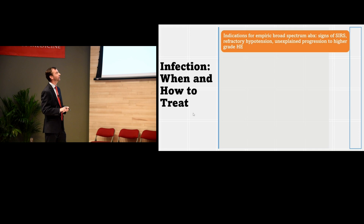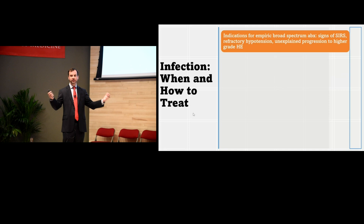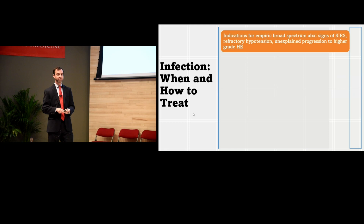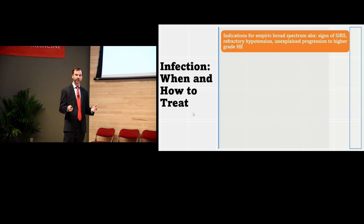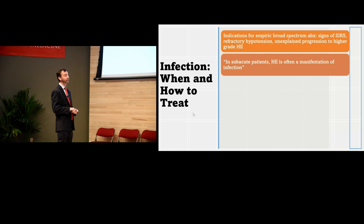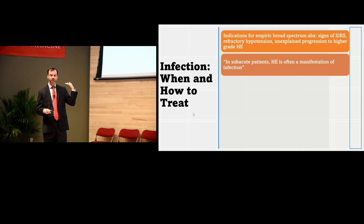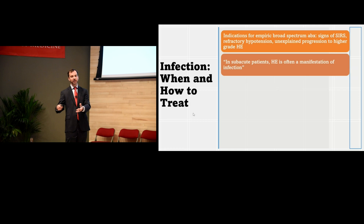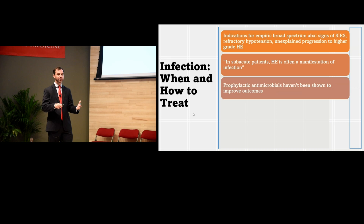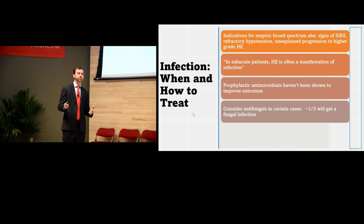According to the European guidelines, start antibiotics with signs of SIRS, refractory hypotension, or unexplained progression to higher-grade hepatic encephalopathy. If these patients are getting more obtunded, that's always a bad sign. In subacute patients, hepatic encephalopathy is often a manifestation of infection — not necessarily CNS infection, but infection anywhere in the body can trigger or worsen HE. That said, prophylactic antimicrobials have not been shown to improve outcomes, so don't have too low a trigger.